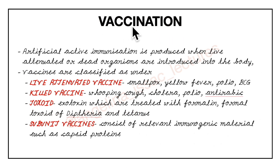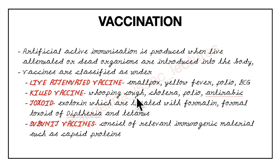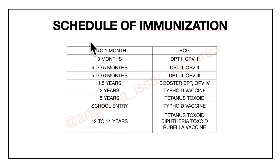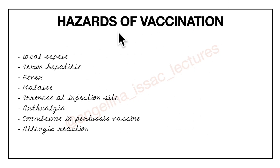Vaccination is an example of artificial active immunity. Artificial active immunization is produced when live attenuated or dead organisms are introduced into the body. Vaccines are classified into: live attenuated vaccines such as smallpox, yellow fever, polio, and BCG; killed vaccines such as whooping cough, cholera, polio, and antirabic; toxoids — exotoxins treated with formalin, such as diphtheria and tetanus toxoid; and subunit vaccines consisting of immunogenic material such as capsid proteins. There is also a schedule of immunization. Hazards of vaccination include local sepsis, serum hepatitis, fever, malaise, soreness at the injection site, arthralgia, convulsions, and allergic reactions.